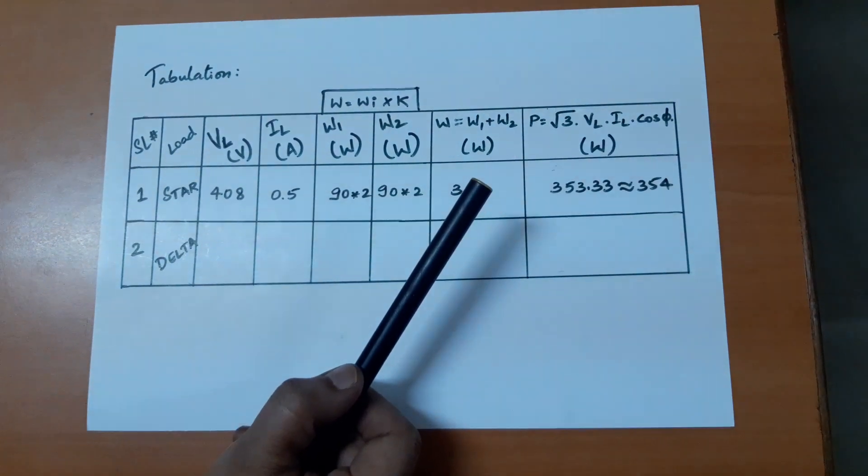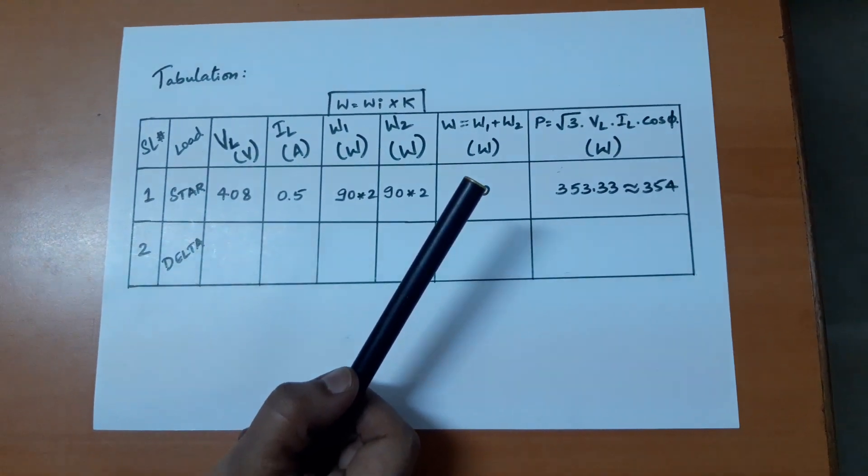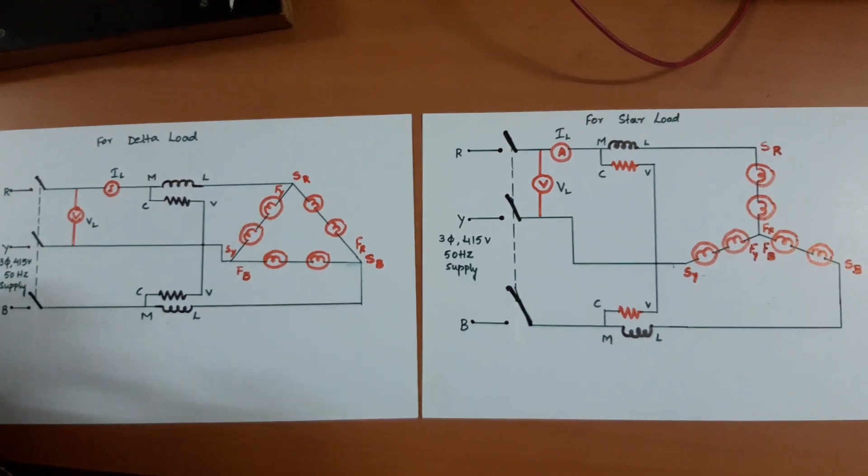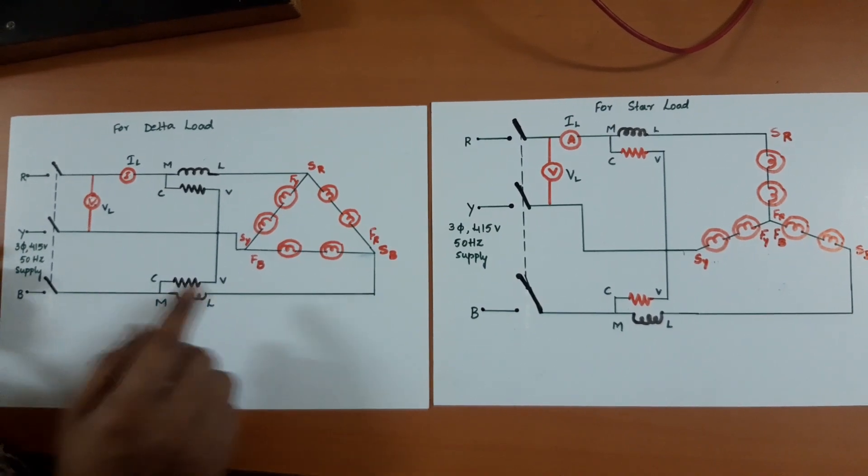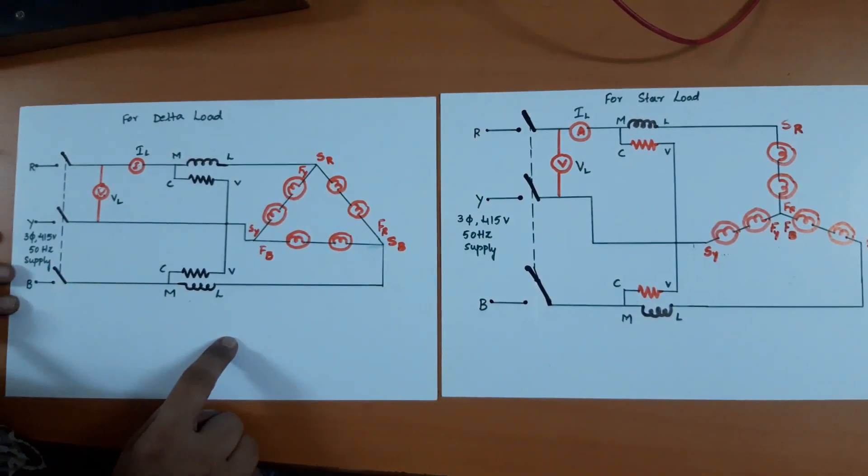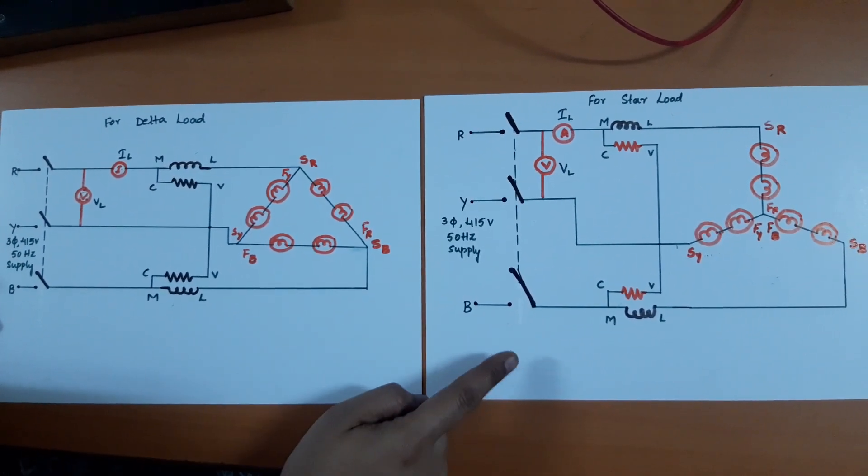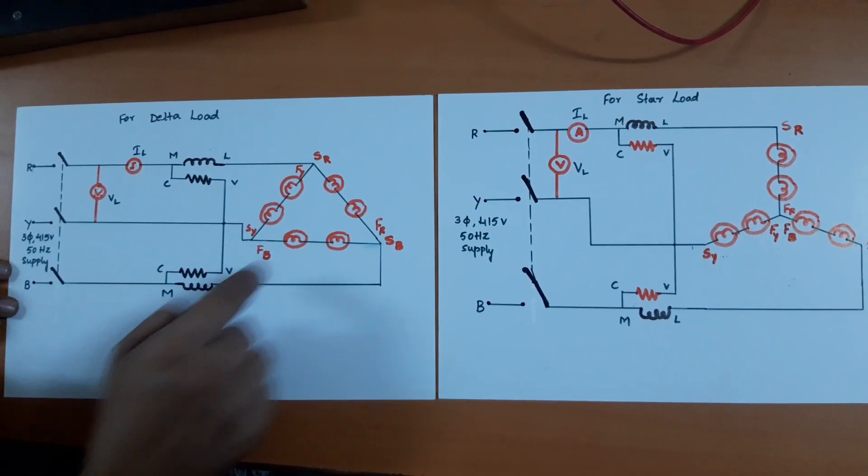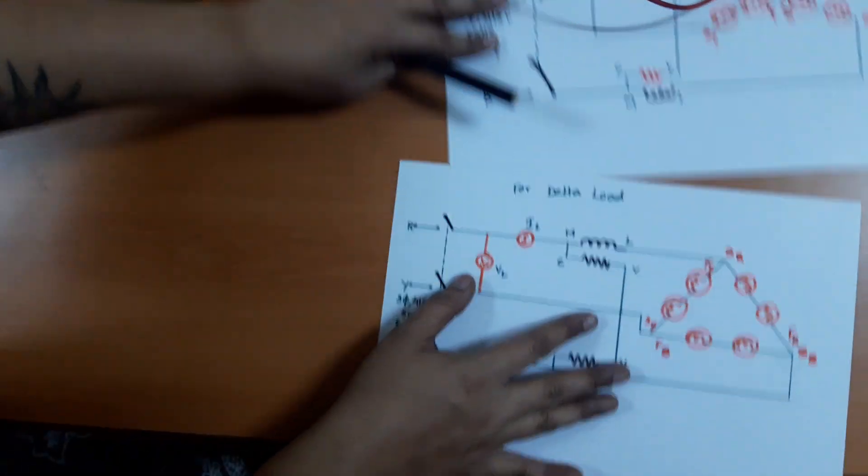We are finalizing that the 3 phase power for a star connected load is measured. Now let us do the next part of this experiment, finding the 3 phase power in the delta connected load. Let us compare the circuits of star and delta connected configurations. The portion till here will remain the same for both.